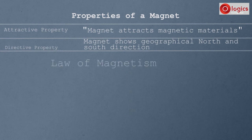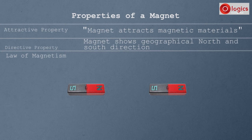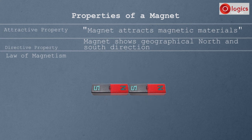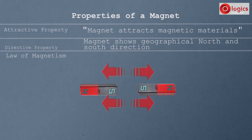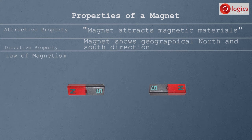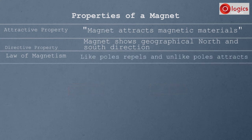Law of magnetism: north and south poles are unlike poles — when facing each other, magnets attract. South and south poles are like poles — when facing each other, magnets repel. Like poles repel and unlike poles attract. This is the law of magnetism.